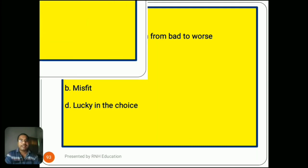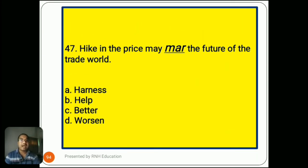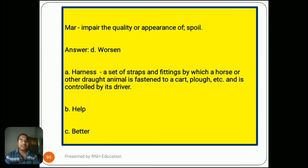Question number 47: 'Hike in price may mar the future of the trade world.' Options are A) harness, B) health, C) better, D) worsen. Mar means impair the quality or appearance of — spoil. So the right answer is D) worsen. Option A, harness, means a set of straps and fittings by which a horse or other draught animal is fastened to a cart or plough. Options B (health) and C (better) are very common words needing no explanation.